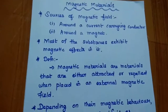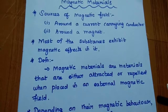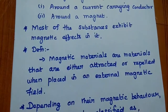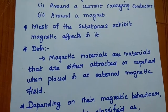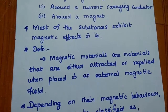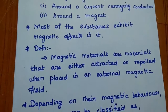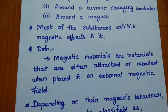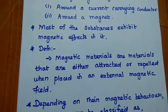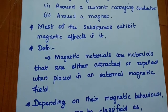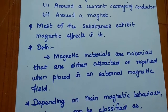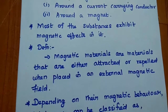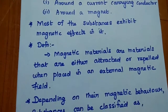From this, we can make a definition of magnetic materials. Magnetic materials are materials that are either attracted or repelled when placed in an external magnetic field. If we place any substance in an external magnetic field, it can be either attracted or repelled. These substances are called magnetic materials.